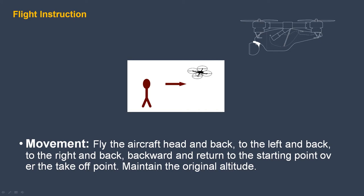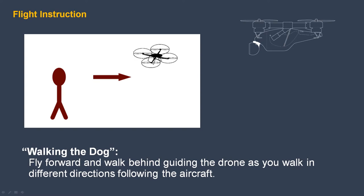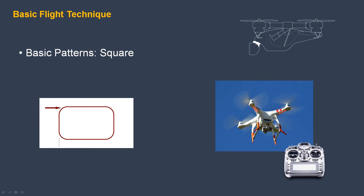There are several exercises that will help the new operator gain flying skills, roughly based on the patterns a student pilot might practice in a Cessna or Piper aircraft. Fly the aircraft ahead and back, to the left and back, to the right and back, backward and return to the starting point, maintaining the original altitude. This exercise is called walking the dog — fly forward and walk behind, guiding the drone as you walk in different directions. In most newer drones, the controller knows which way the drone is facing — sometimes called headless mode.